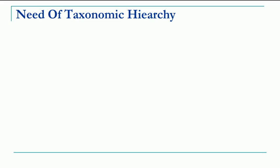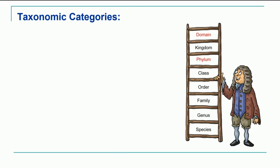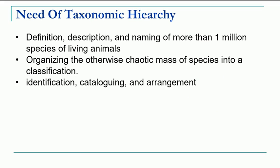For this purpose, organisms need to be identified, described, named, and then organized into a particular system. Such classification becomes an indispensable prerequisite for the identification, cataloging, and arrangement of these different species which are identified over the period of time.